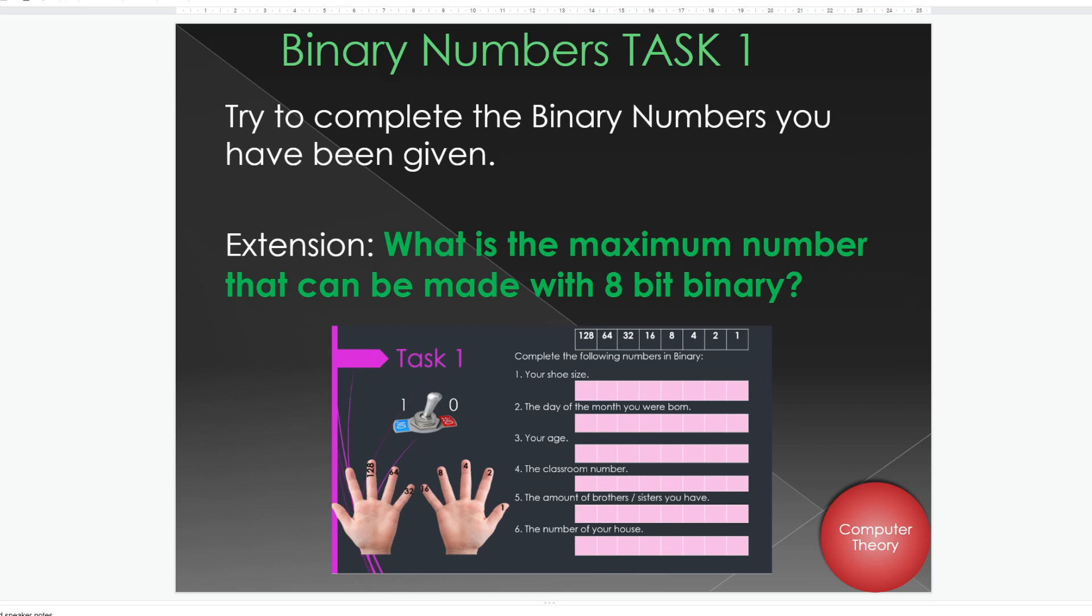And then the extension question, which will be on your workbook, is what is the maximum number you can make with an 8-bit binary? And that is, if you just add all the numbers at the top of this little table, so the 1, 2, 4, 8, 16, 32, 64 and 128, if you add all them together, what number would you get? If you pause the video and try that and do that work now for me.